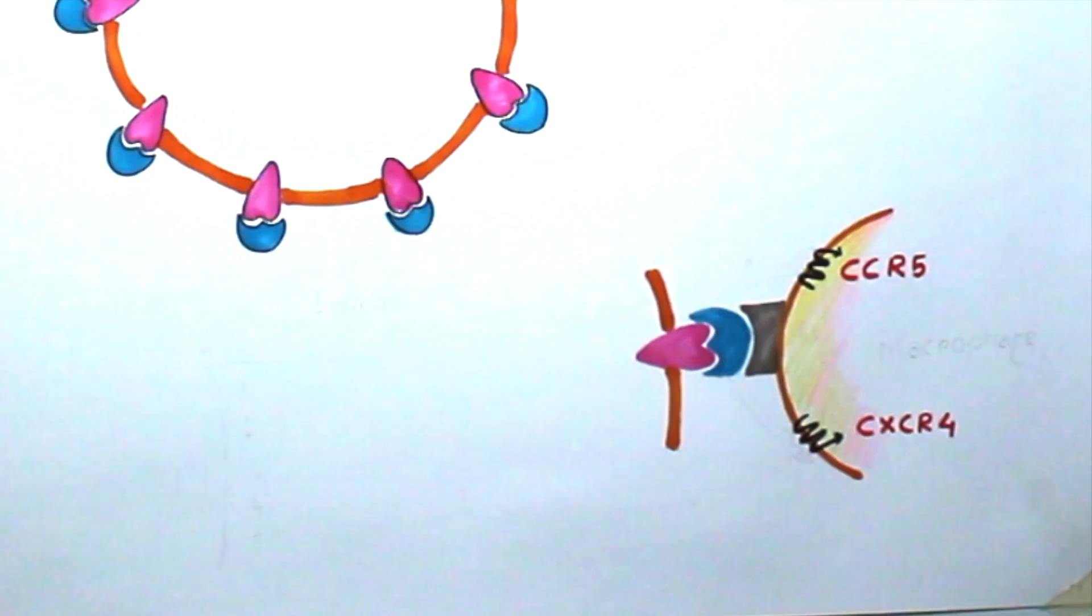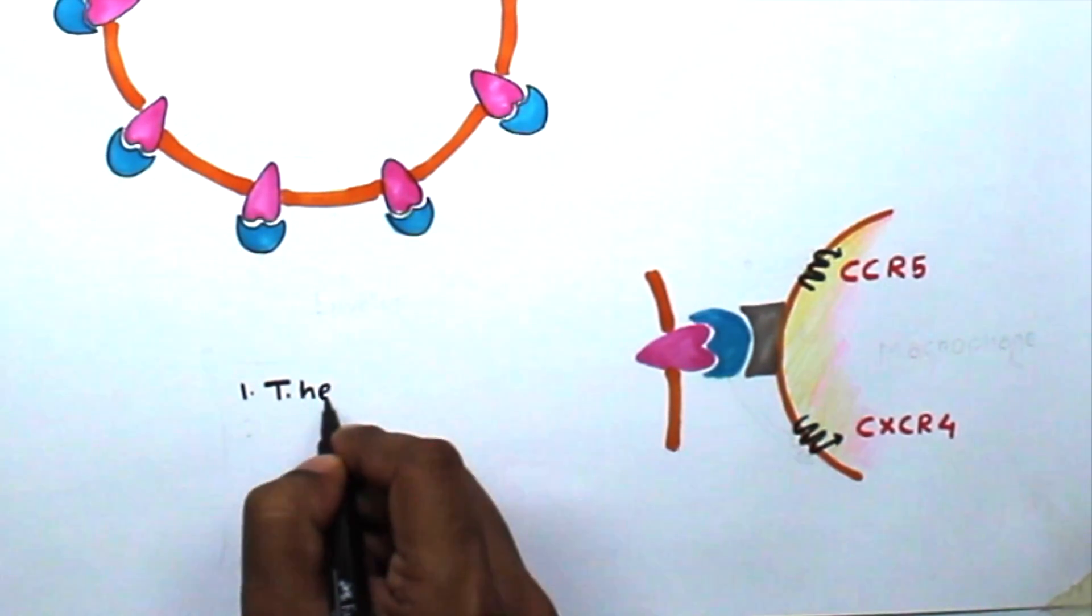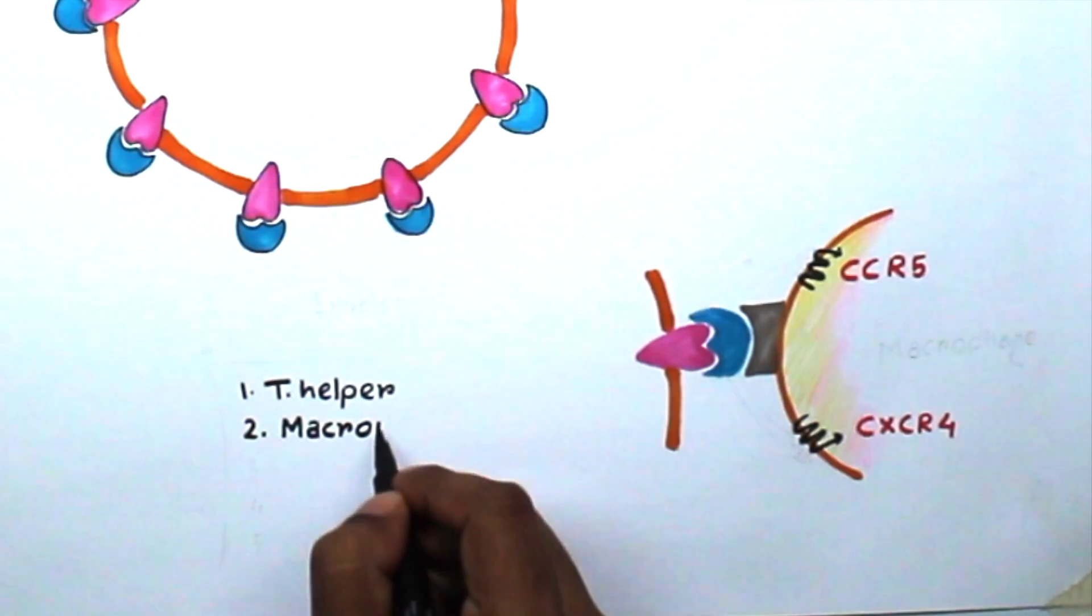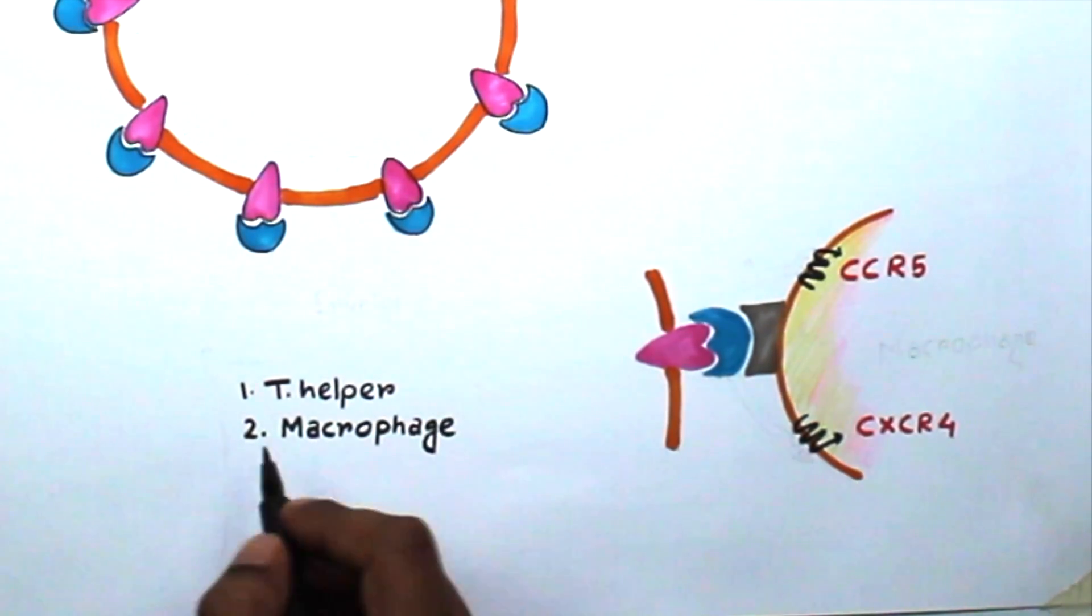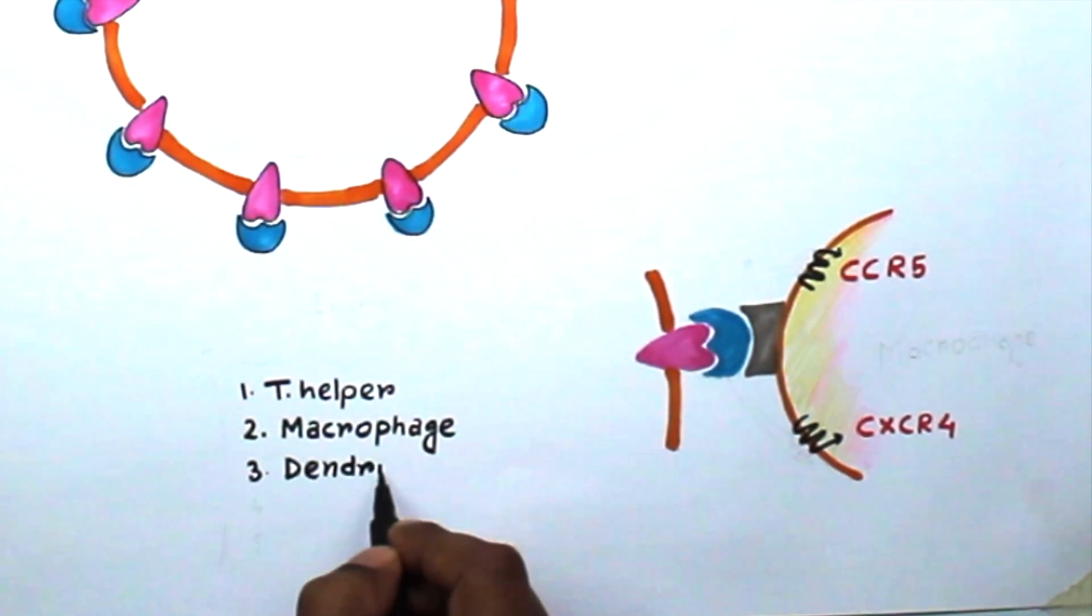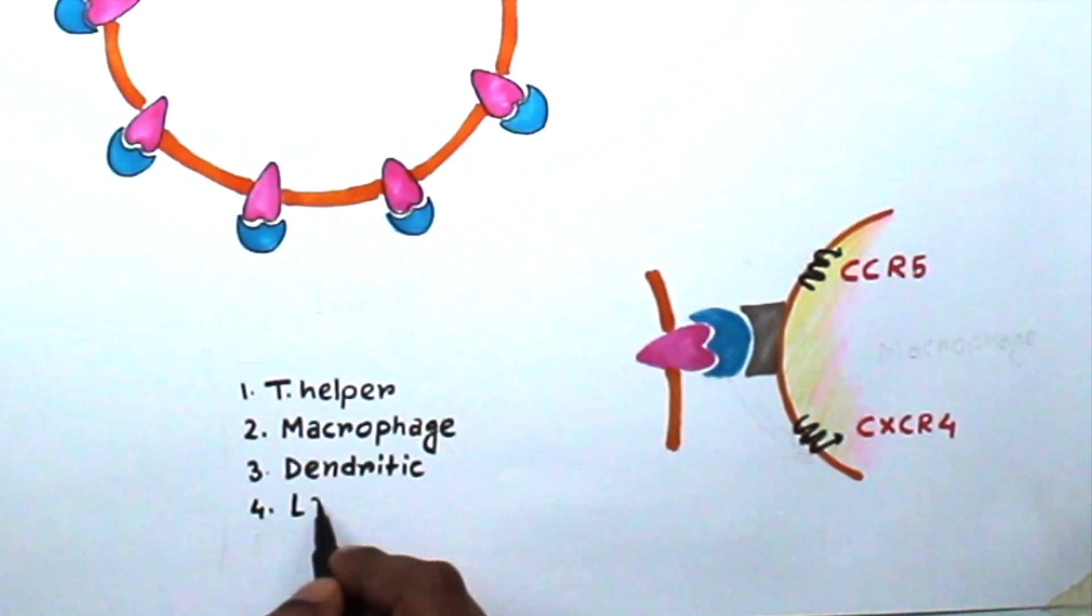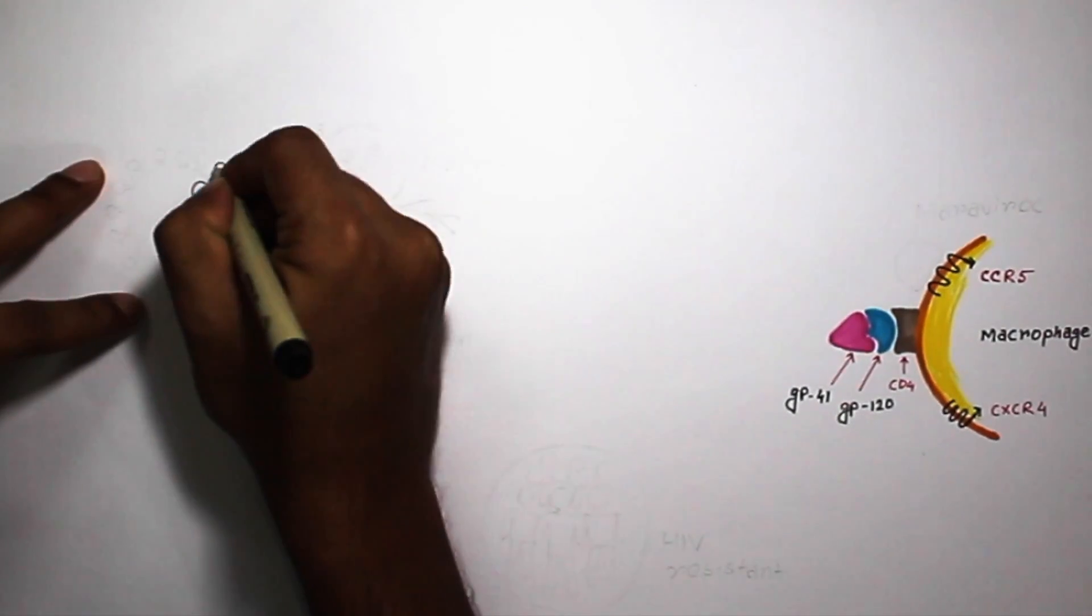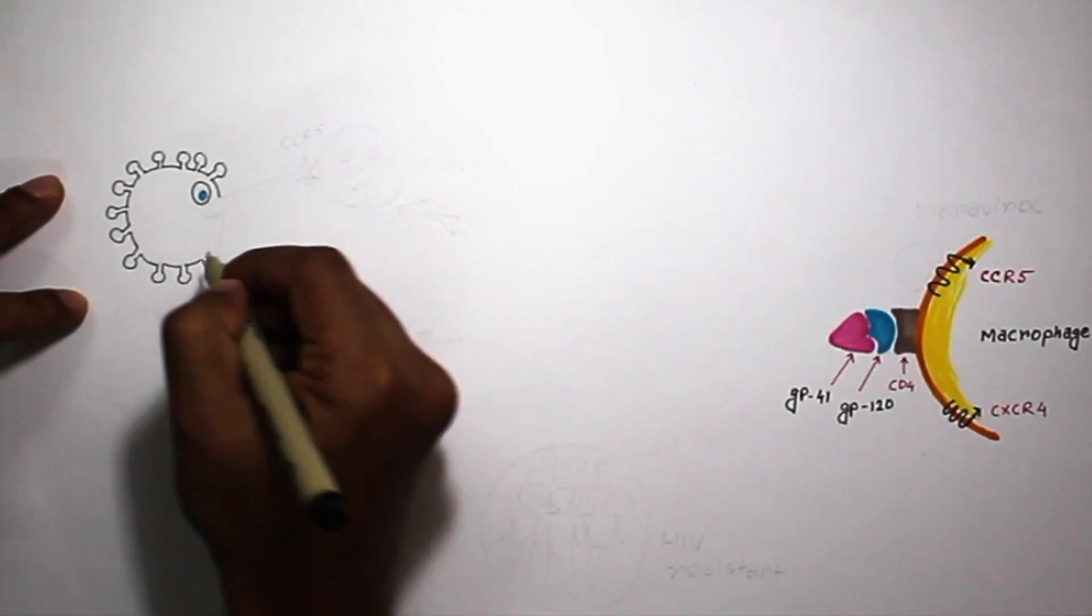Here I would like to mention that CD4 positive cells are not only the T helper cells. There are other types of cells like macrophage, dendritic cells, Langerhans cells, and microglial cells. They are all CD4 positive. Now, the important point is the active site for T helper cell is CXCR4, and for other CD4 positive cells, here, CCR5.